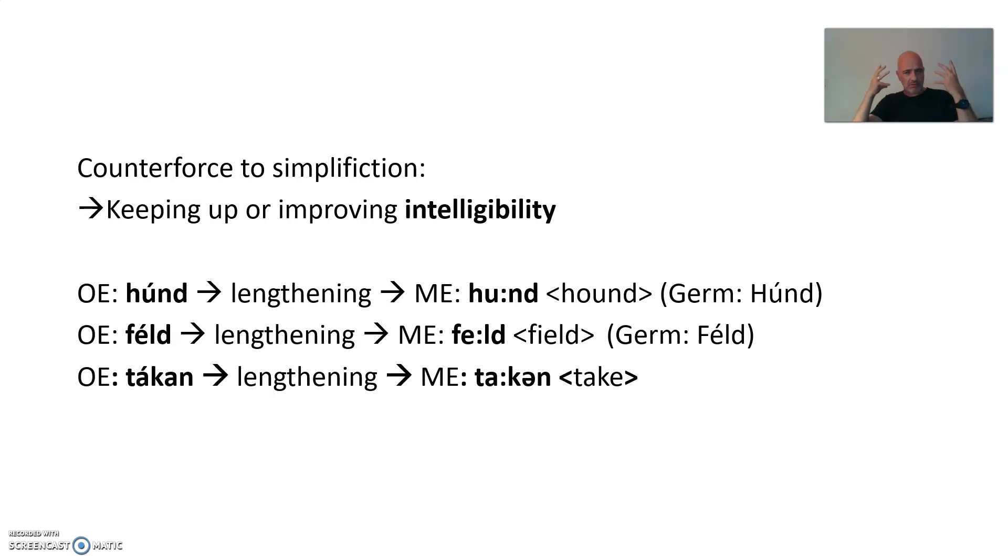So the counterforce to simplification would be intelligibility or improving intelligibility. Wanting a serious wish that you want to be better understood. Look at this. These are a few examples here. Old English hund, hund, hund. Very short. And this turned in Middle English into something like hund. And there you see, hund is easier to be listened to, easier to be understood, particularly when you probably talk about great distances. Instead of where's hund? So you lengthen to make yourself more intelligible, understandable.